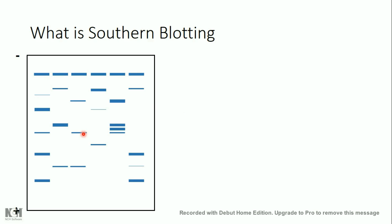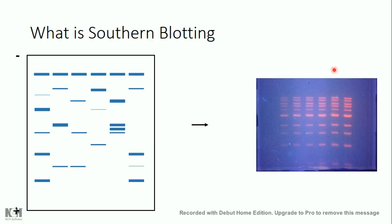In order to search for a specific sequence, I should perform blotting. Because if I just visualize the gel — using ethidium bromide, SYBR green, or other molecules — I would see all the bands but cannot differentiate the sequence of my interest from other sequences. So I cannot identify the gene of my interest from other genes. To do so, I should perform southern blotting.